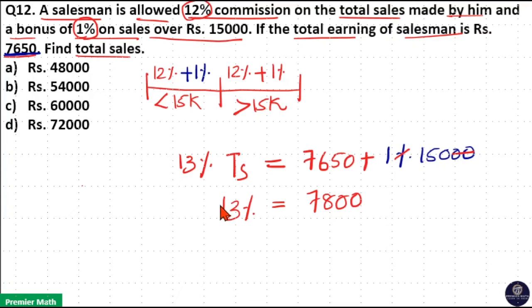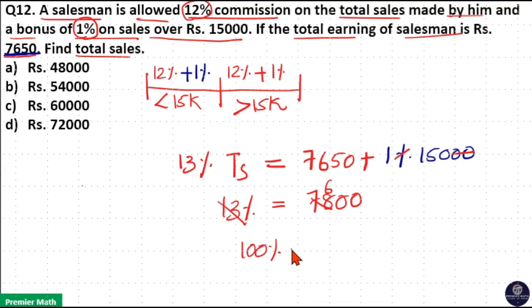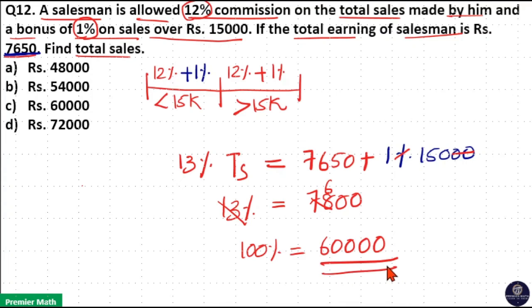13 goes 6 times into 78, so 1% = ₹600, and 100% = ₹60,000. So the answer is option C: total sales = ₹60,000.